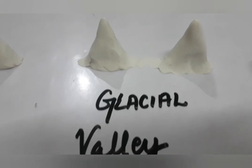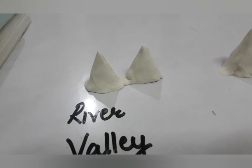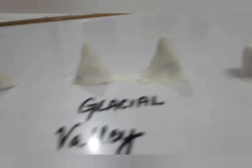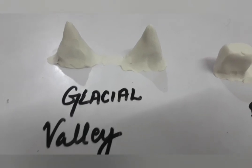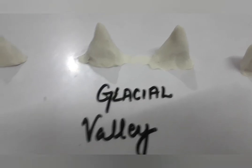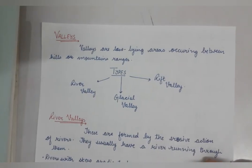I am showing you again — the glacial valley is U-shaped, and the river valley is V-shaped. You can make small mountains with clay and then arrange them to show whether it is a river valley, glacial valley, or rift valley. This is a better way of learning when you make things on your own and think about them.